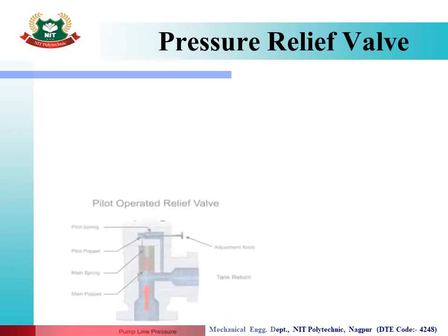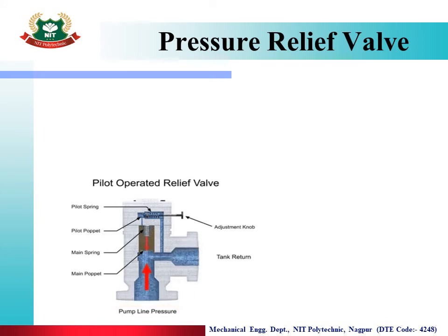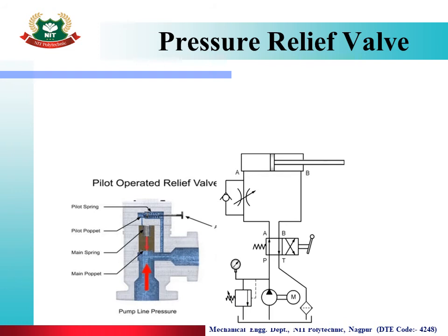Pressure Relief Valve: the name indicates its function — it relieves or releases pressure whenever it exceeds the set limit. In the animation, fluid comes from the pump line; when pressure rises, the valve shifts upward and return line flow goes back to tank. You can adjust the pressure setting with an adjustable knob. The valve components are: main poppet, main spring, pilot poppet, pilot spring, adjustable knob, and tank return line.